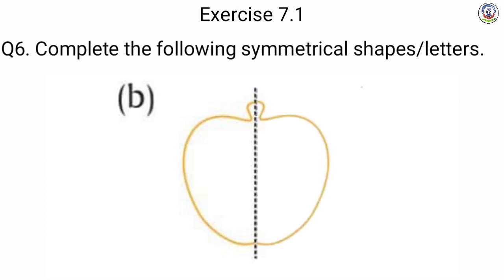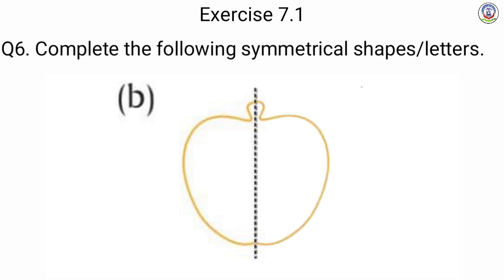यह जो हम लोग का apple होता है उसका shape बन गया. Next is C — we have a triangle shape but it is half. In the other part we also draw a triangle, so it becomes a square — हम लोग का slanting square draw हो जाएगा.